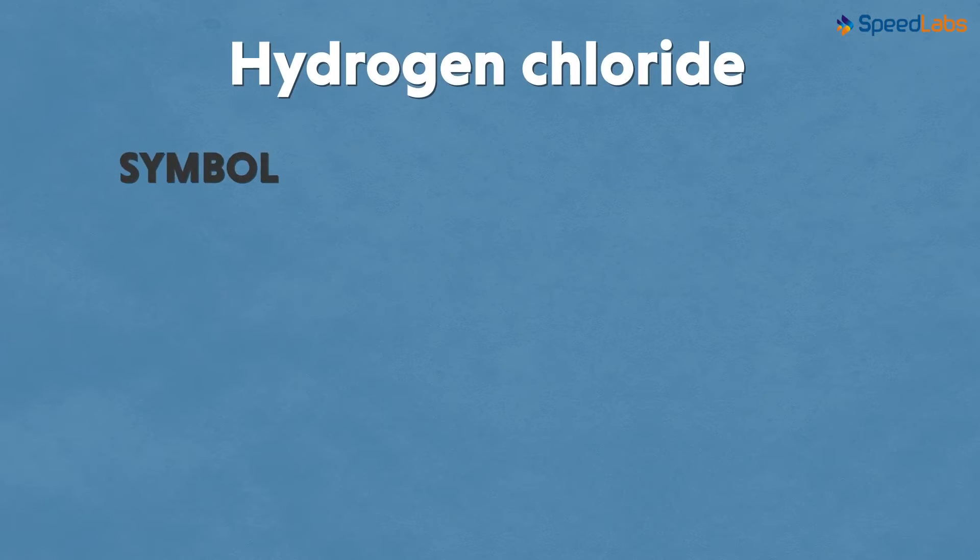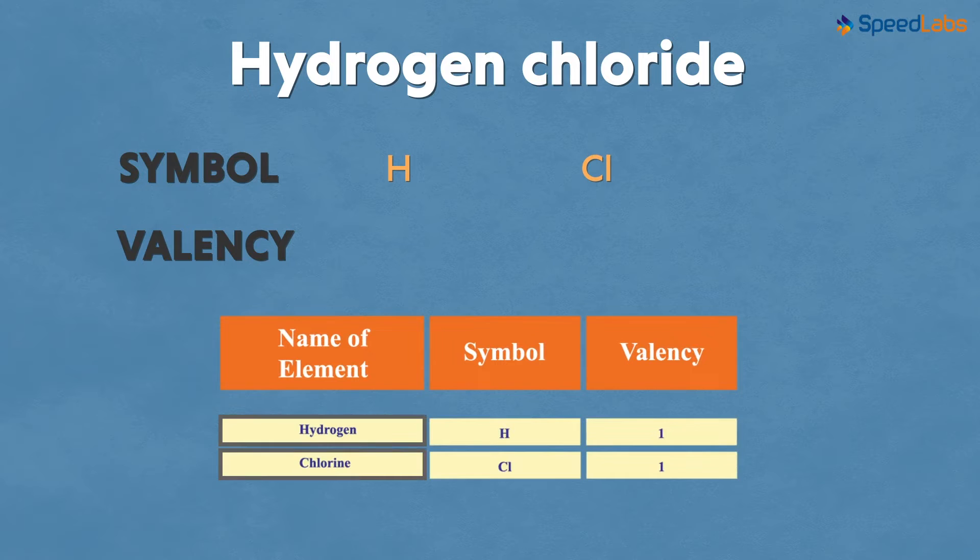We first write the symbol for each, followed by their valencies. The symbol for hydrogen is H and that for chlorine is Cl. And what are their valencies? Our reference chart says it's one for each.